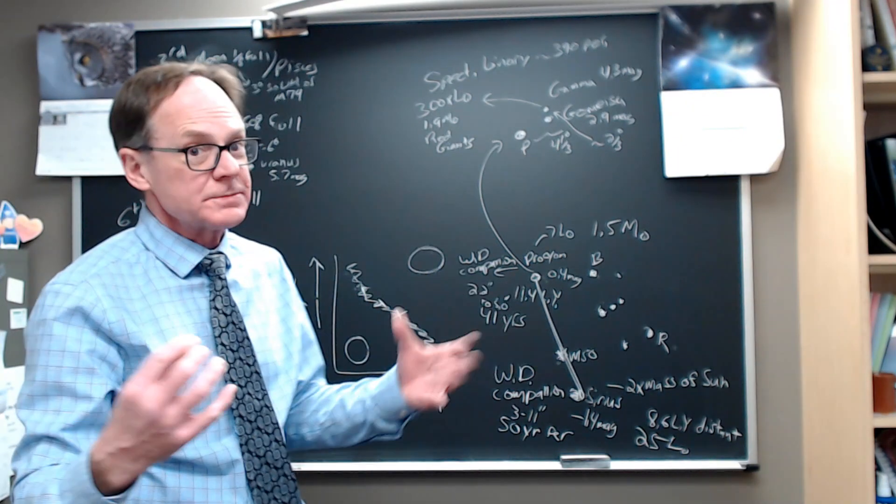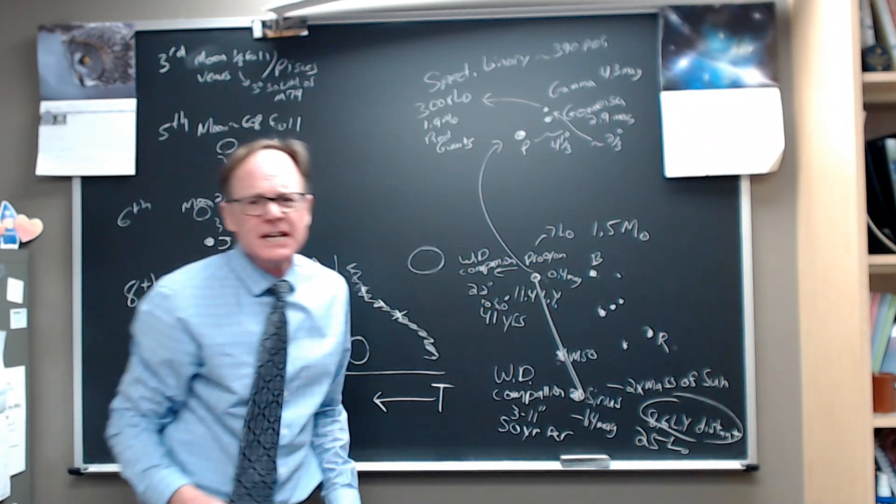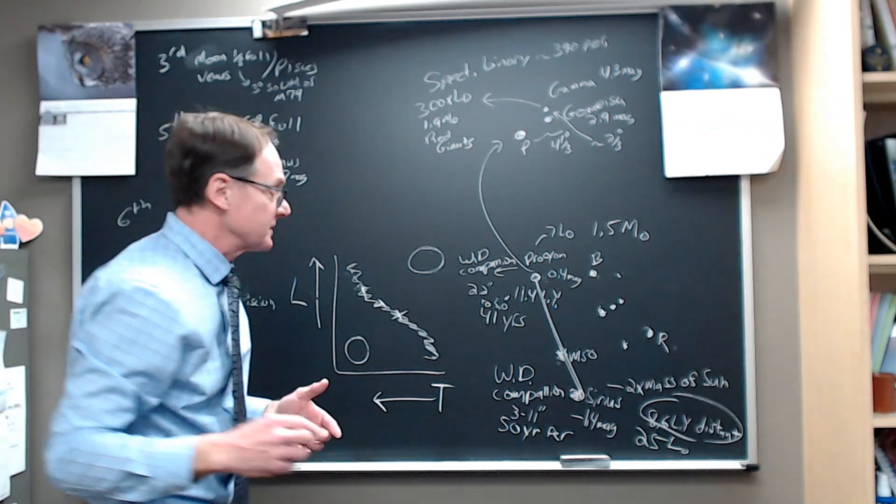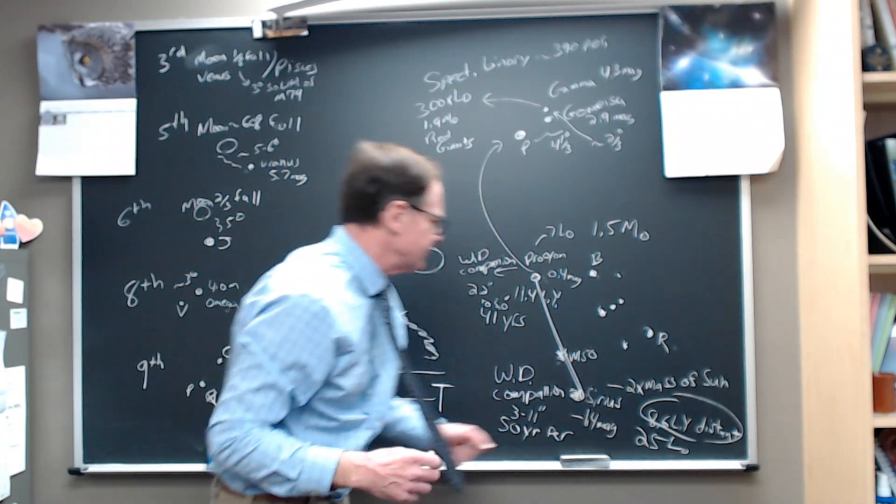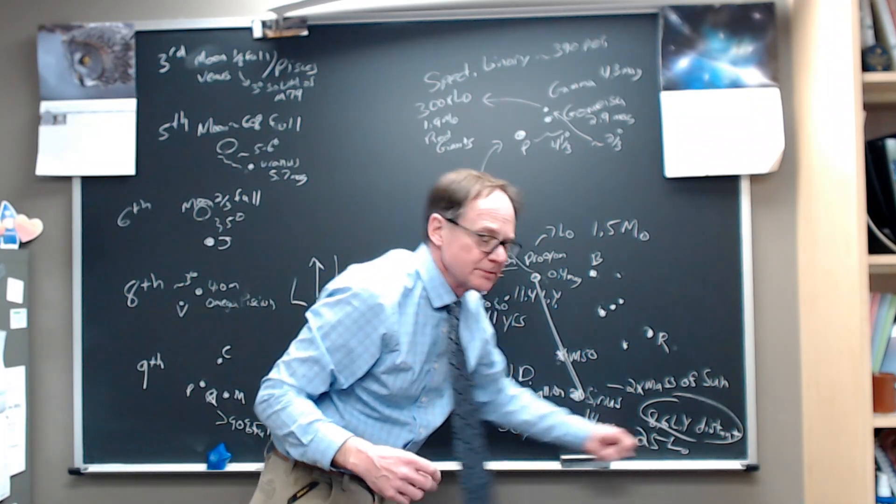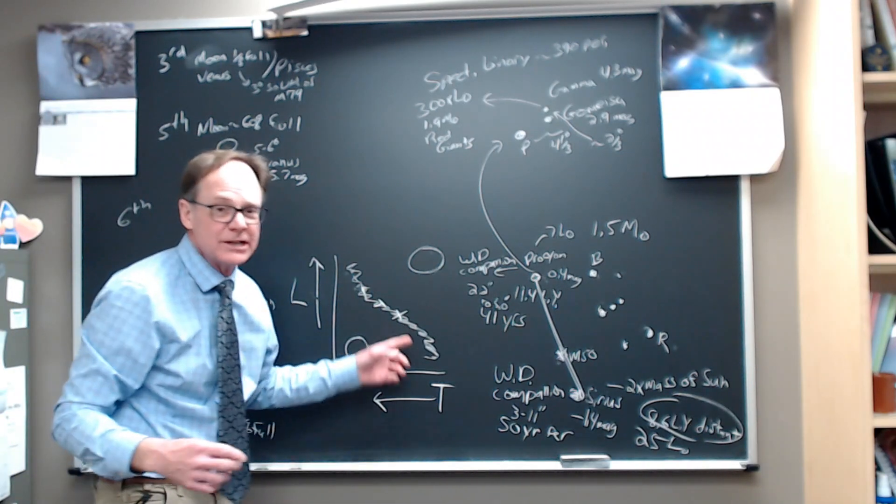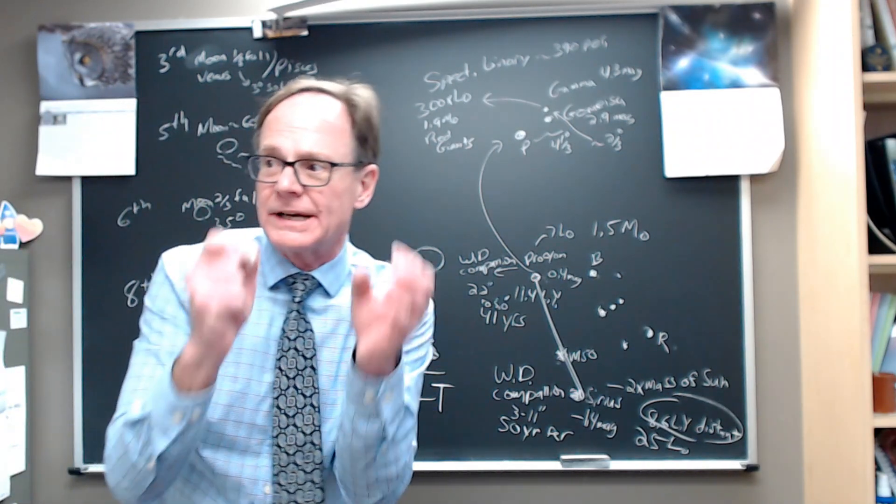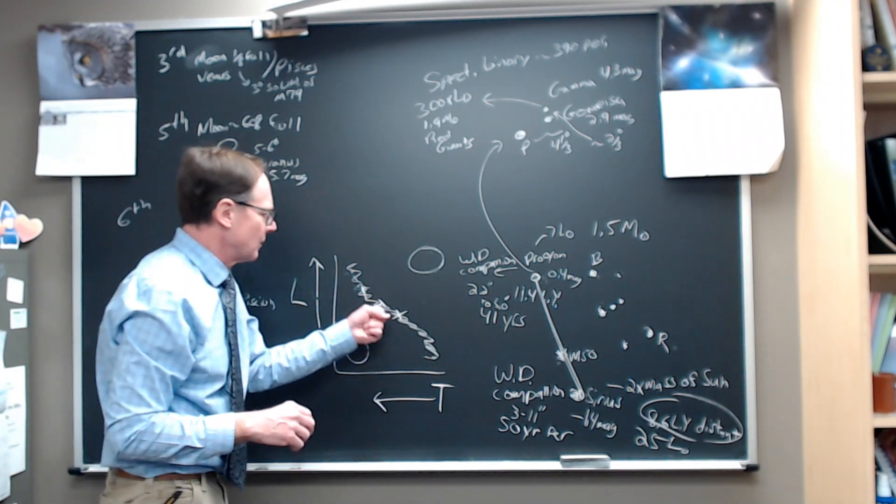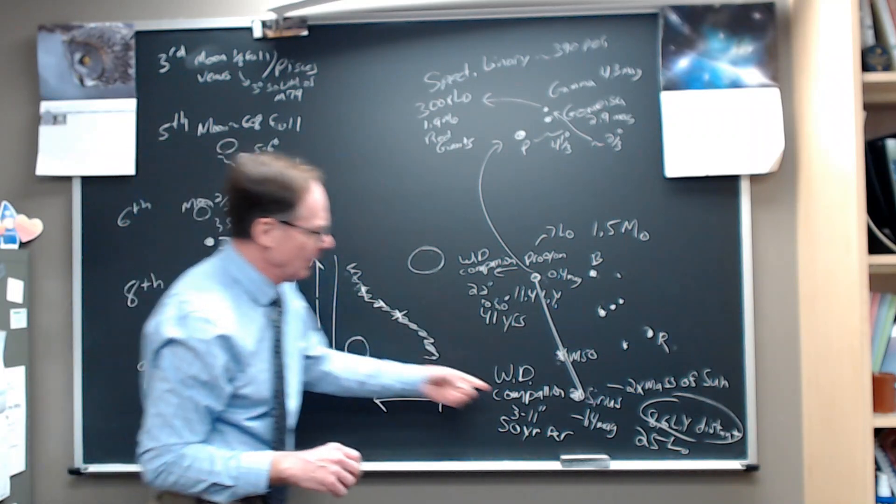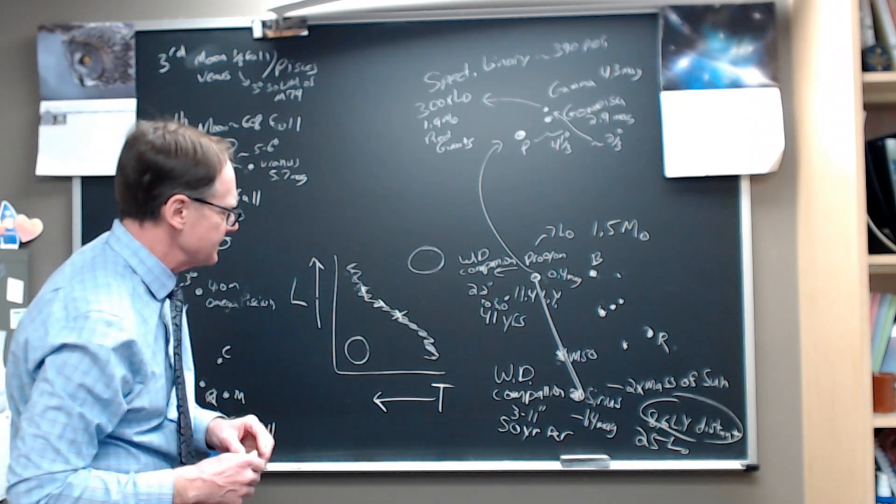It's 8.6 light-years distant. So it's only about twice as far away from us as the nearest star. It's pretty close. It's not the closest star. It's not the brightest star, but it's a good combination of both of those things. It's about 25 times brighter than the sun, about two times the mass of the sun. One of the things we learned is on the main sequence, how bright a star is, how luminous it is, how much energy it's emitting, goes up rapidly with mass. So two times the mass of the sun, we get 20, 25 times the luminosity of the sun, these are rough approximations.